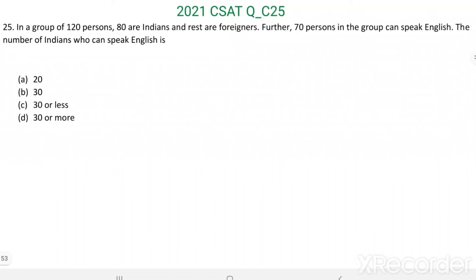Question number 25. In a group of 120 persons, 80 are Indians and rest are foreigners. Further, 70 persons in the group can speak English. The number of Indians who can speak English is...